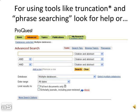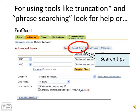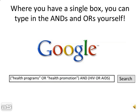For using tools like truncation and phrase searching, look for help or look for the search tips on the screen. Where you have a single box, you can type in the ANDs and ORs yourself.